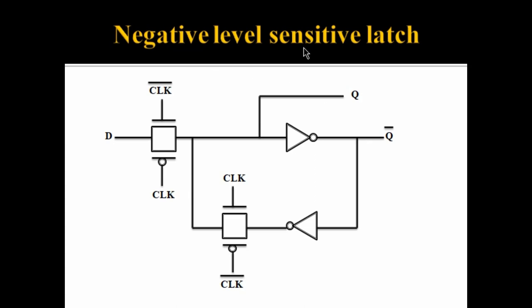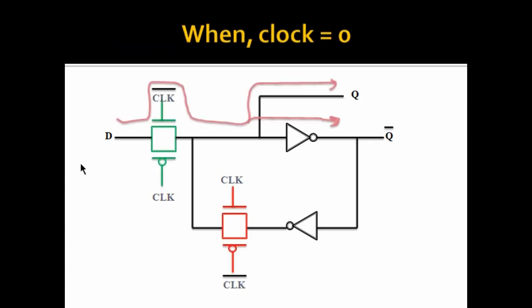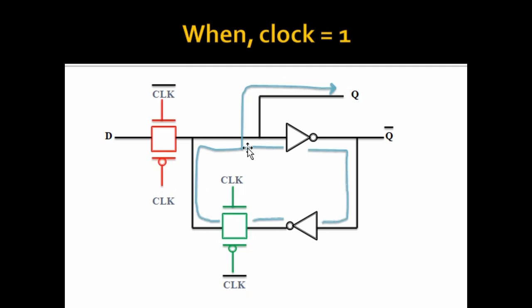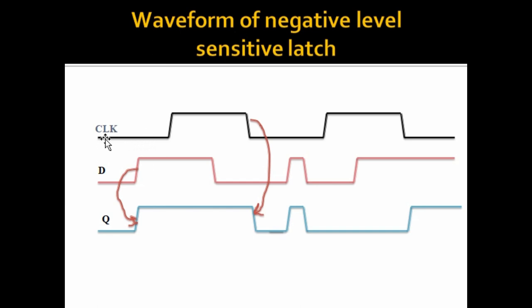Now let's quickly look at the negative level sensitive latch as well. It works in exactly the opposite manner to a positive level sensitive latch — it is transparent when the clock is low and it retains its older value when the clock is high. So when the clock is low, one transmission gate is on and the other is off, so the data is exactly reflected at the output. While the clock is high, the previously stored data is shown at the output. When the clock is low, the latch is transparent and Q exactly follows D.